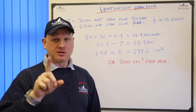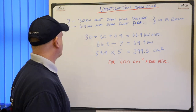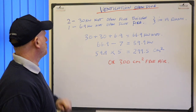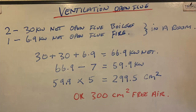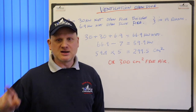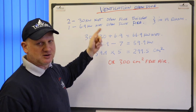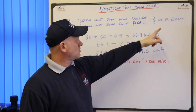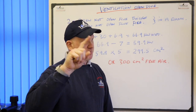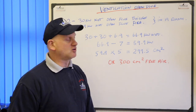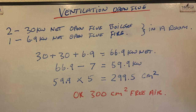Now let's talk about multiple appliances — open flued appliances, remember. So in this house we have two 30 kilowatt net open flued boilers, and one 6.9 kilowatt net open flued fire, all installed in a room. The question has told us all the information we need — it's net, not gross, so we don't need to divide by 1.11. So we have 30 plus 30 plus 6.9, which is 66.9 kilowatts net.